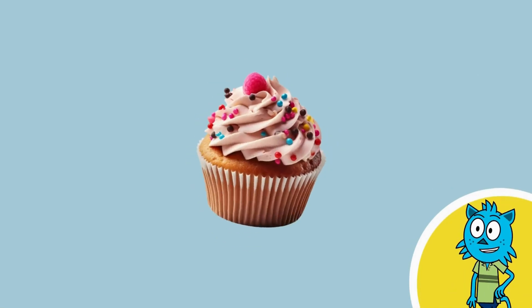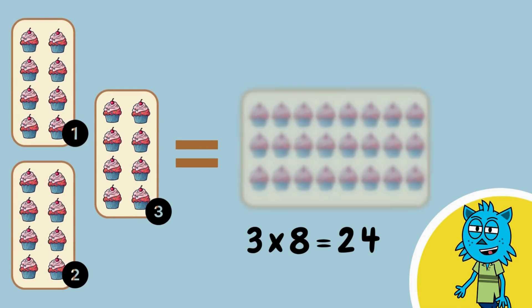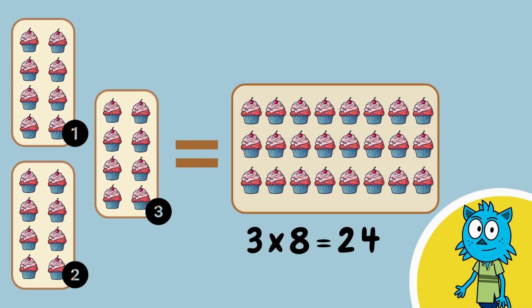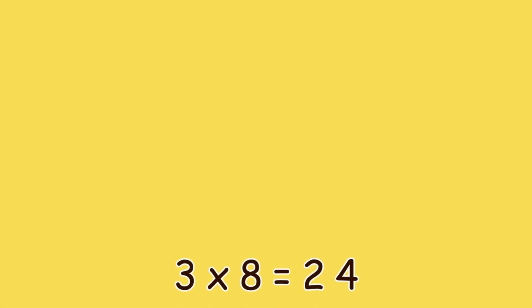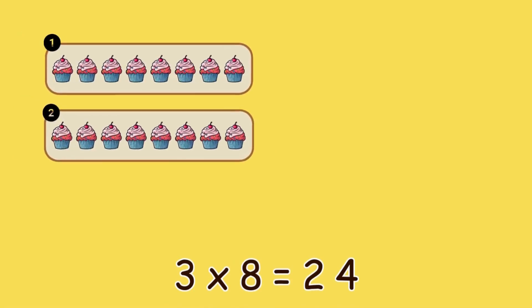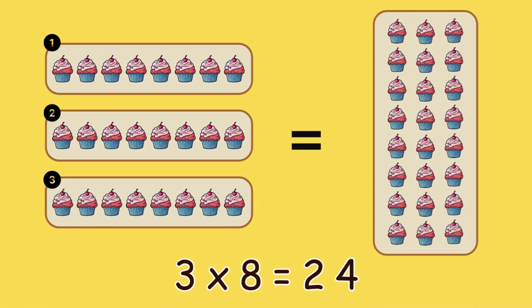Let's move on to cupcakes. Three groups of eight cupcakes equals twenty-four cupcakes. Three times eight — one, two, three — is twenty-four.